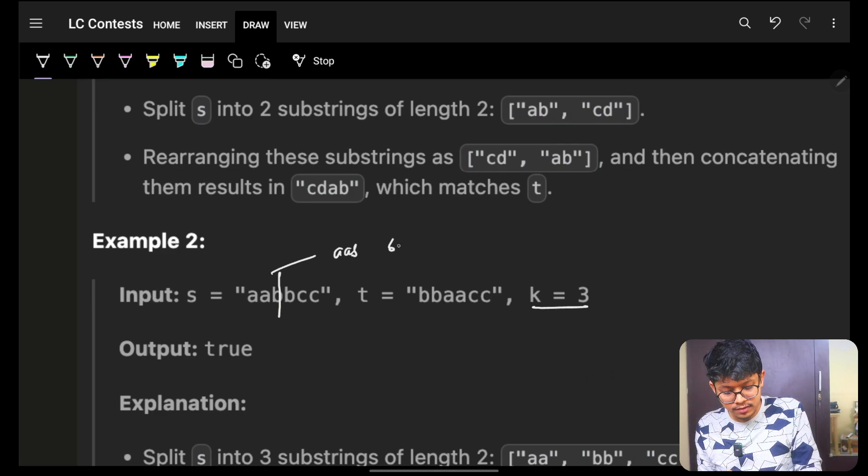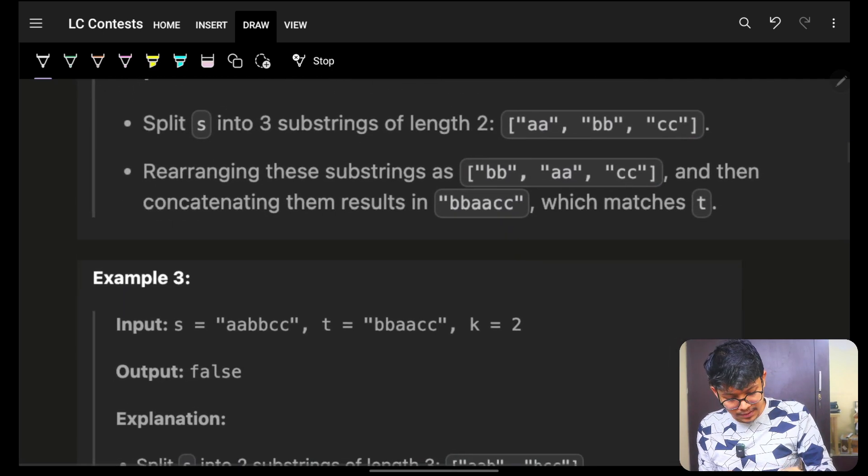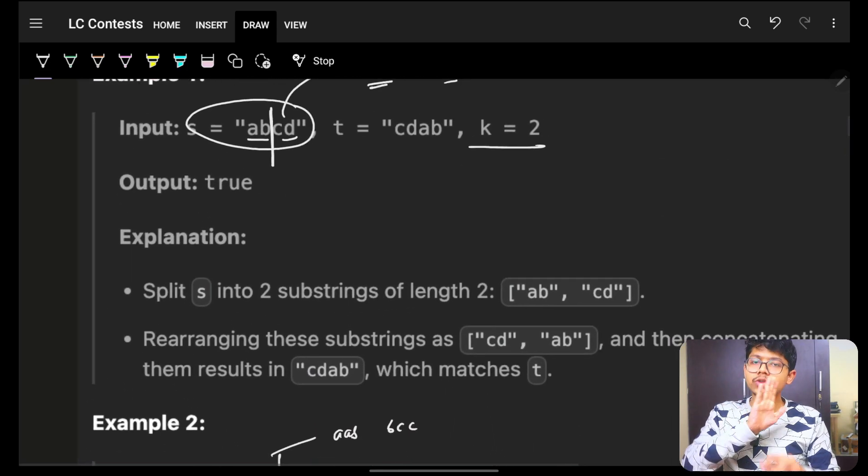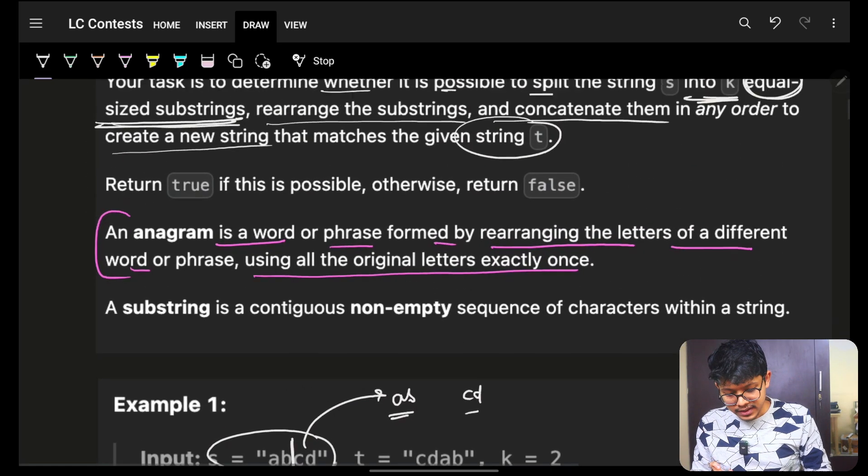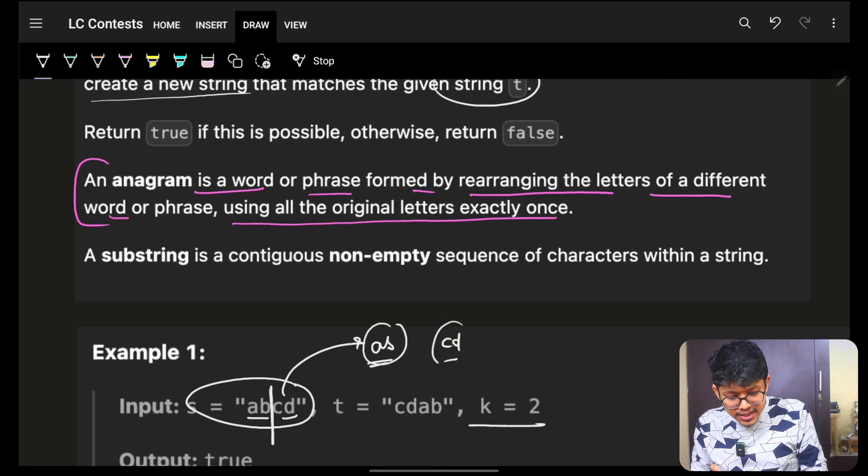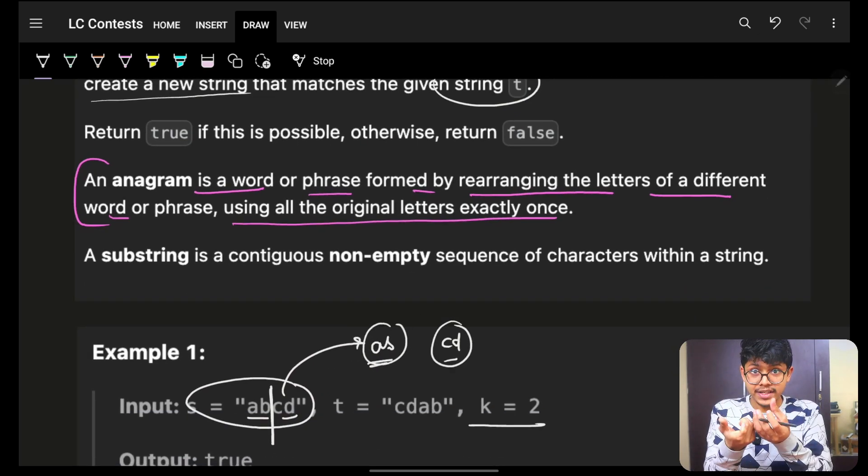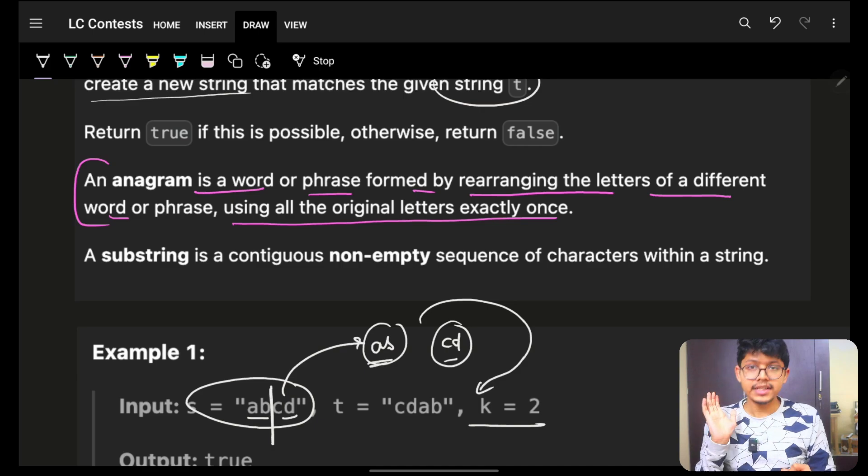These will be fixed. Next, ab will be the substring. cd will be a substring. Same way, here in this example, K equal to 3. So divide it here. First will be aab. Next will be bcc. Next example, K is 2. Divide it here. It will be aa. Next is bbcc.